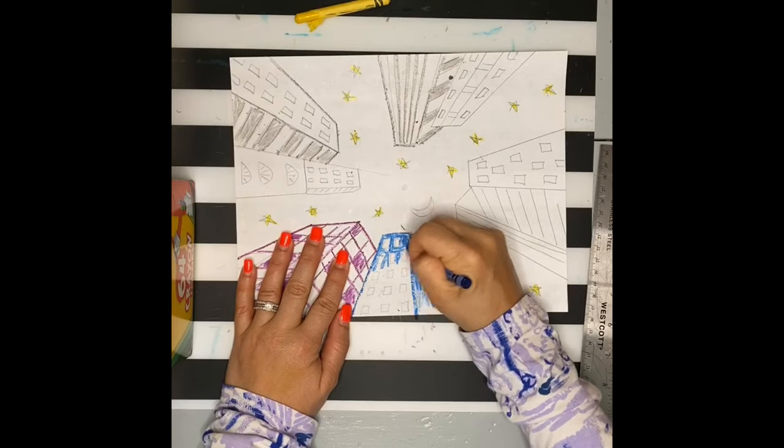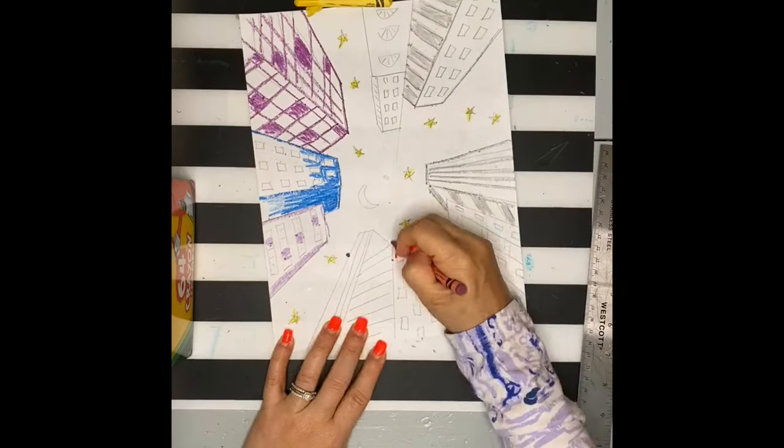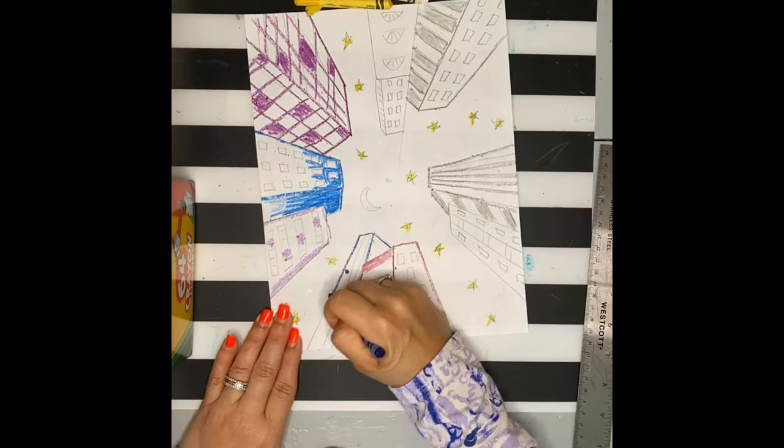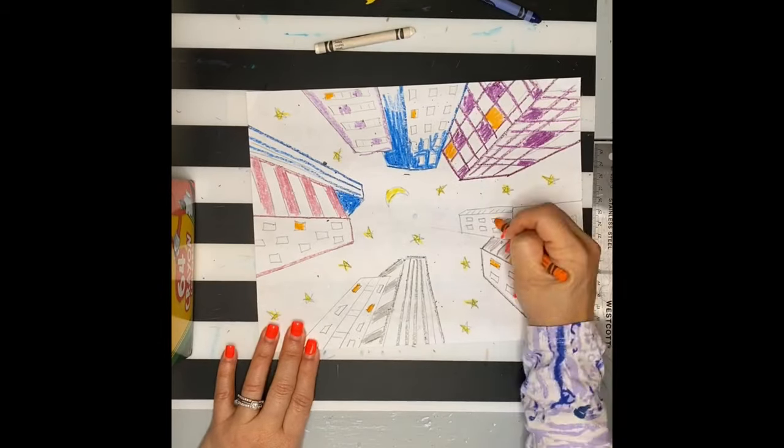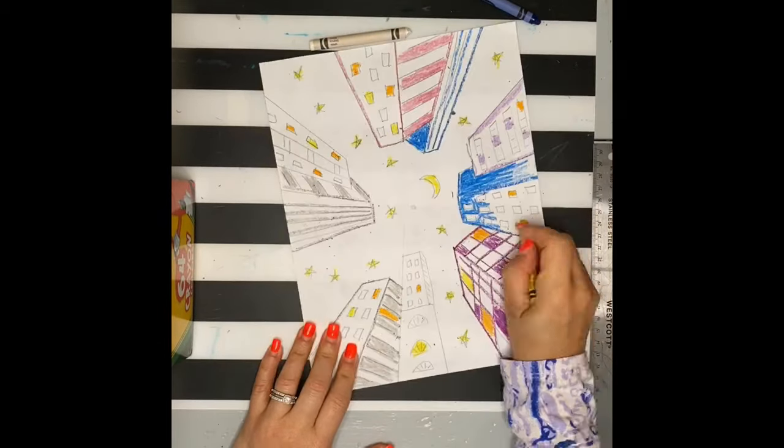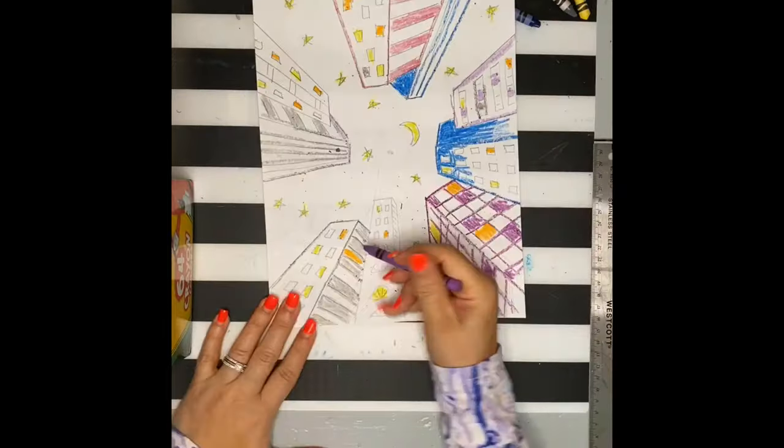Once it's dry, I can use markers and add some details and outline things as I need to. Again, totally up to you. Use colored pencils if you want. And there it is. Sign your name at the bottom.